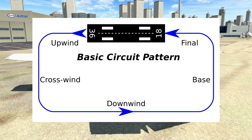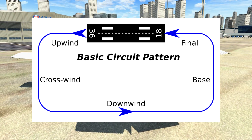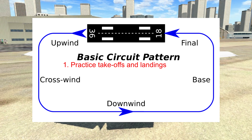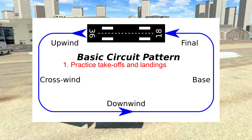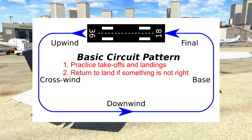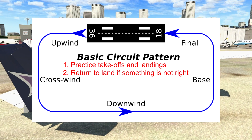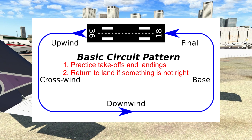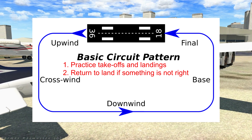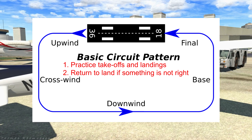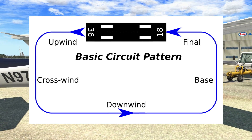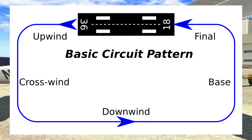Why would we want to do this? Two reasons. One, to practice takeoffs and landings — circuits enable us to do as many as possible in a given amount of time. Two, to quickly return to land if we discover something is not right after takeoff, such as an aircraft malfunction, deteriorating weather, or you've forgotten your cell phone or other equally important issues.